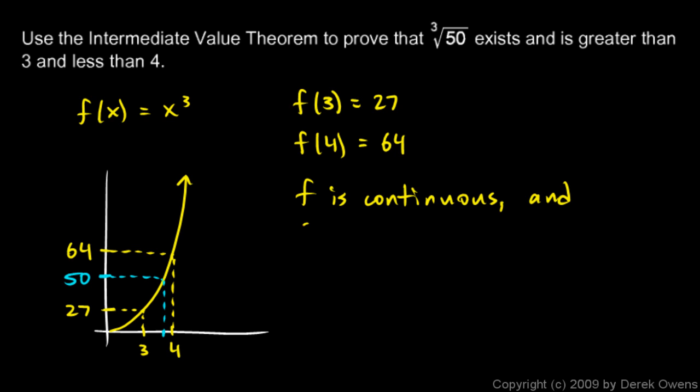because the intermediate value theorem only applies to continuous functions. f is continuous, and I'll say, and 50 is between 27 and 64. And we see that visually right here. 50 is between 27 and 64, so there must be some x value down here between 3 and 4,